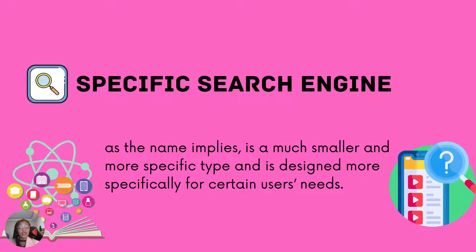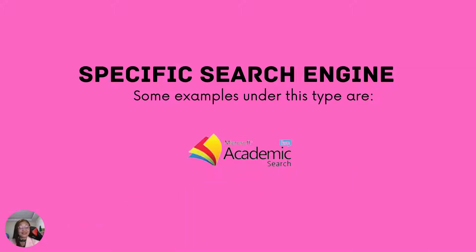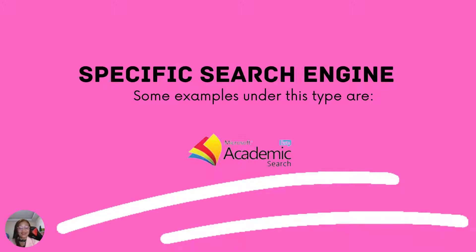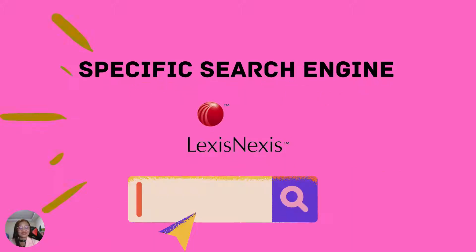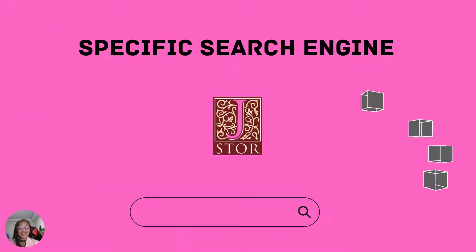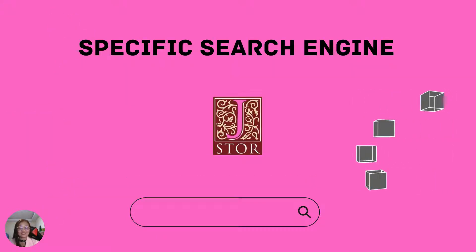Specific search engines, as the name implies, are a much smaller and more specific type and are designed more specifically for certain users' needs. Some examples under this type are Academic Search, LexisNexis, and Jaster.